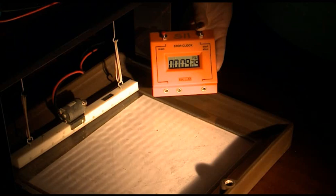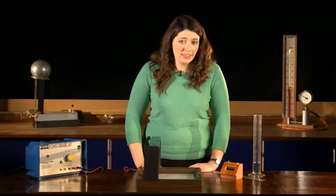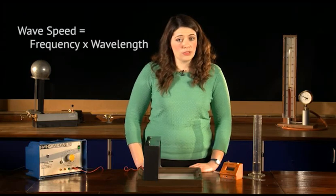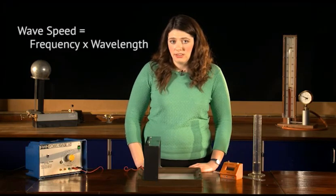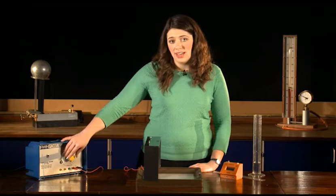Once you've got these two values, all you need to do is multiply them together to find the wave speed, because wave speed equals frequency times wavelength. Once you've done that, you might want to try it for different frequencies and wavelengths.